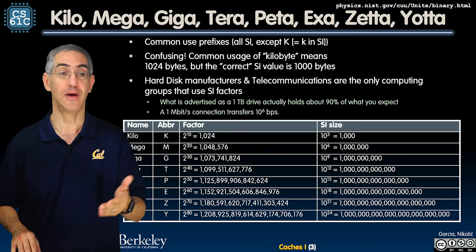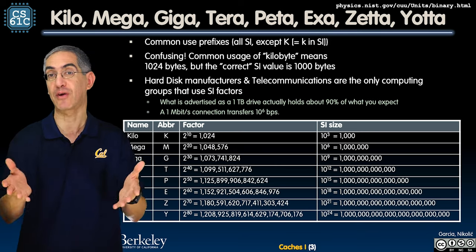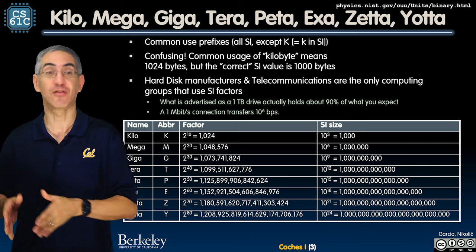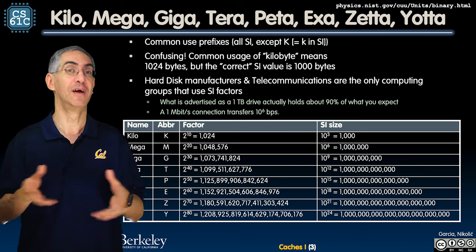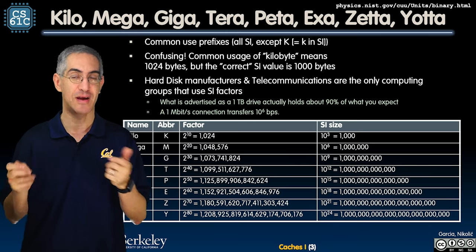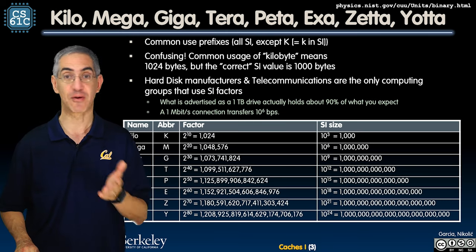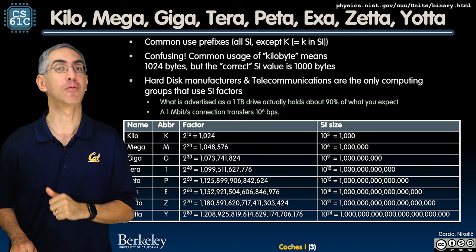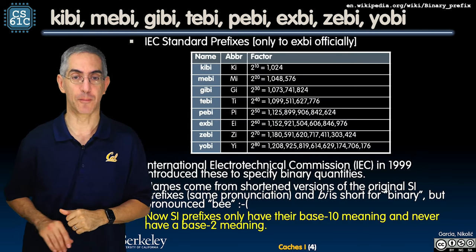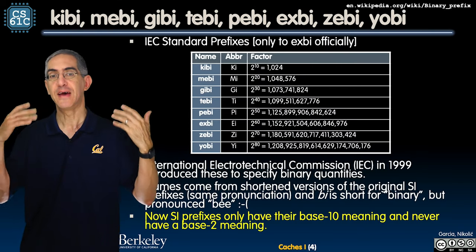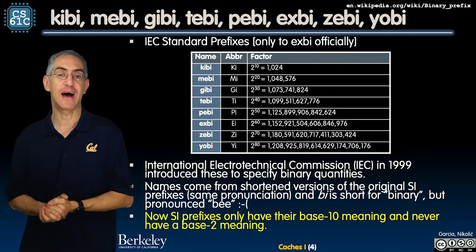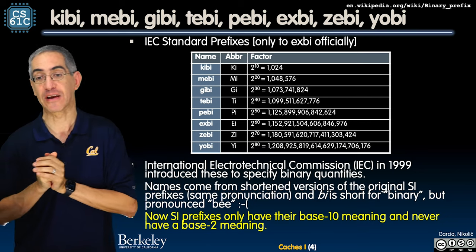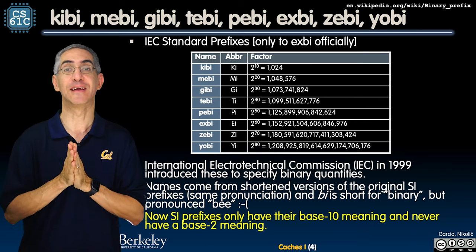We need to talk about this in the right way. If someone asks how big is your cache and you say 'a kilobyte,' do you mean a thousand bytes or 1024? We need distinct words for these. We can't keep overloading 'kilo.'